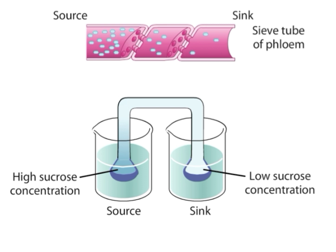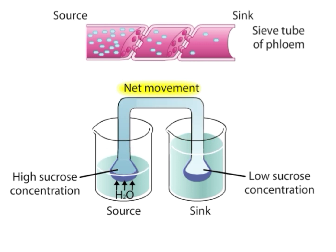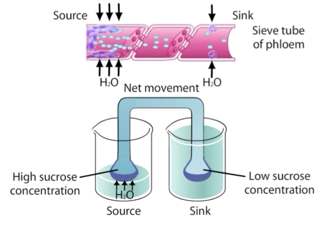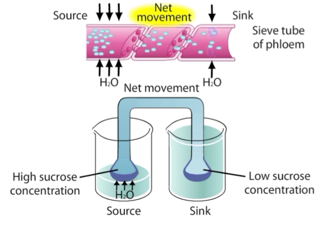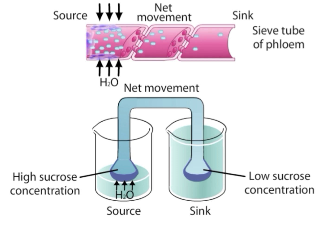Now suppose a high sucrose concentration is added to the left side — the source. Water rapidly passes through the semi-permeable membrane from source to sink. Net movement is observed: water moves rapidly from source to sink because of the high sucrose concentration in the left container. The high water entering through the source pushes the sucrose solution toward the sink. This demonstrates the net movement in the pressure flow experiment.